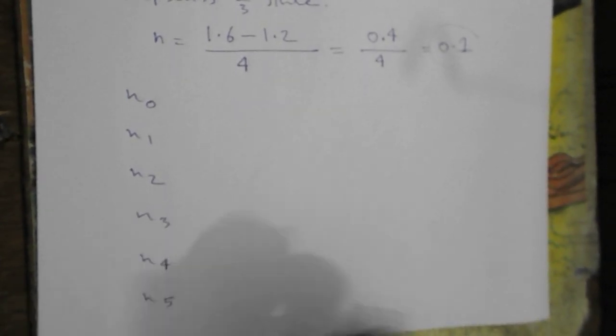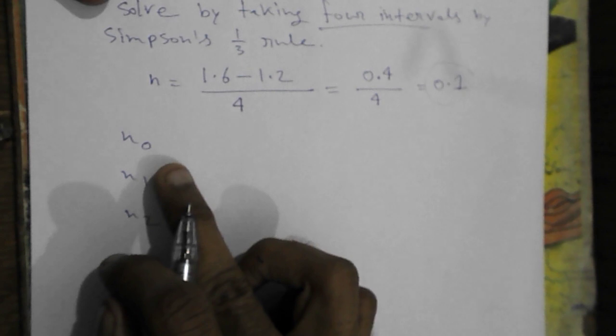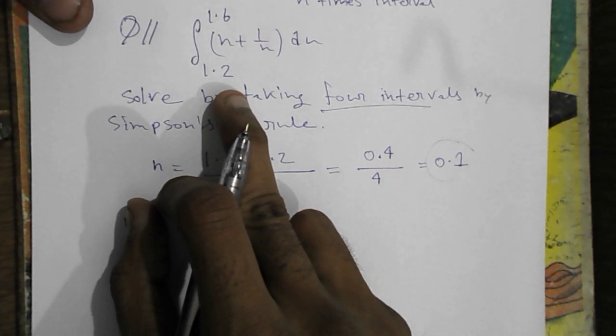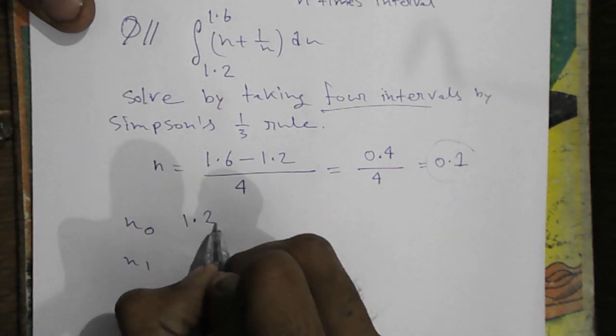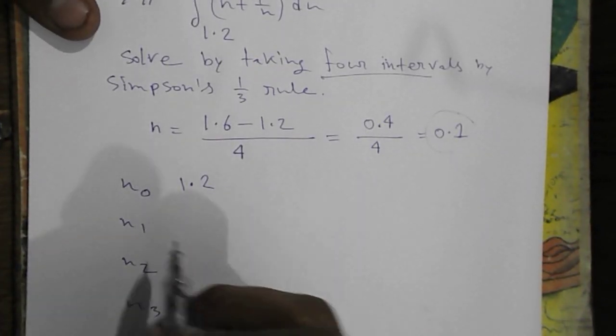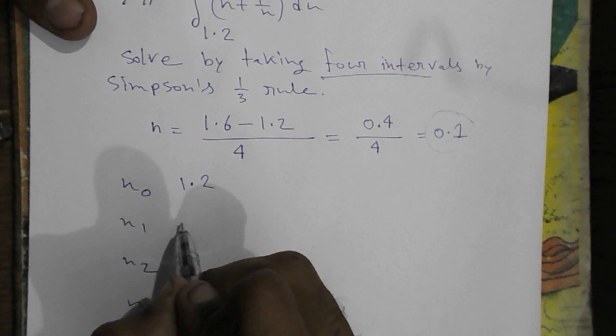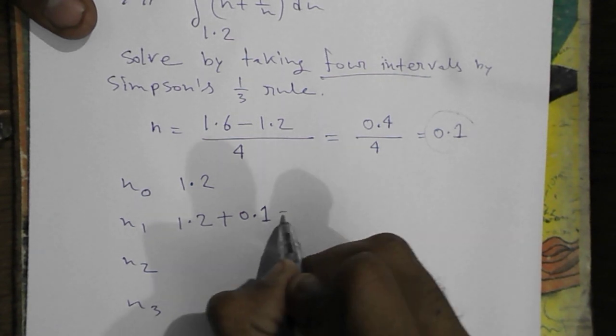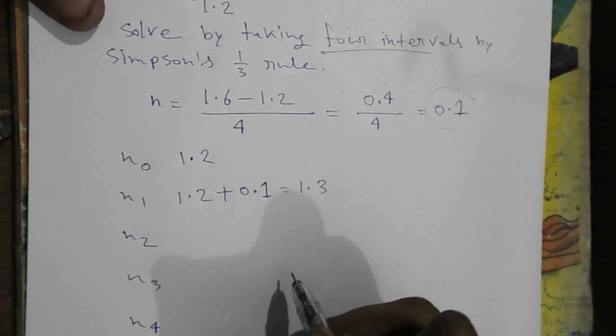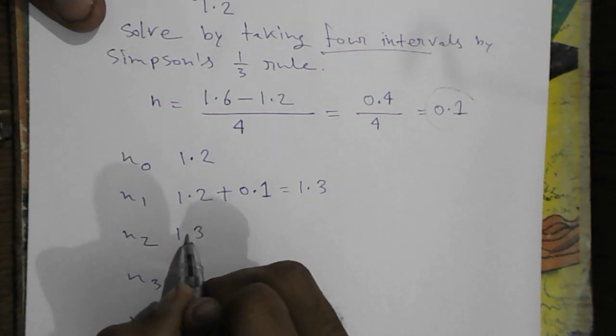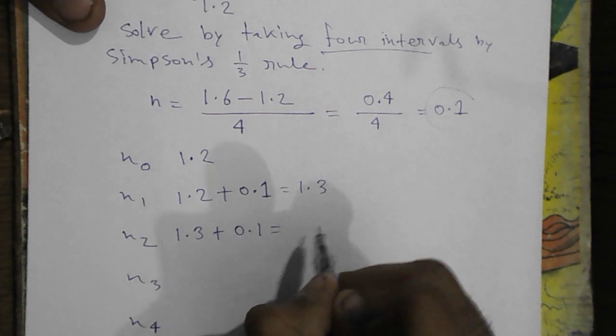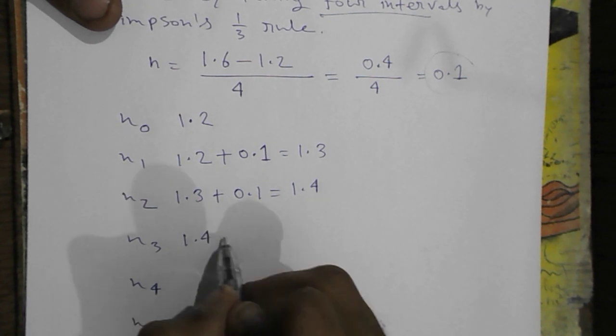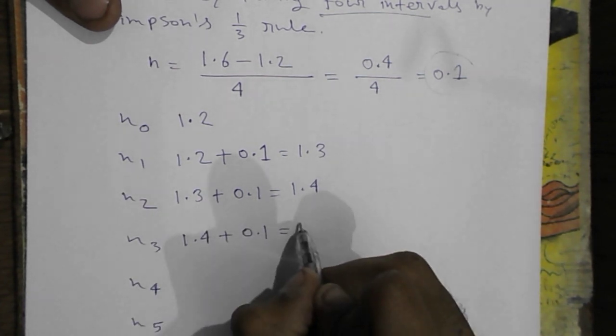x0 will be the lowest limit, that is 1.2. And next we will add 1.2 plus 0.1 that is 1.3. After that with 1.3 we will add again 0.1 that is 1.4. After that with 1.4 we will again add 0.1 and that is 1.5.